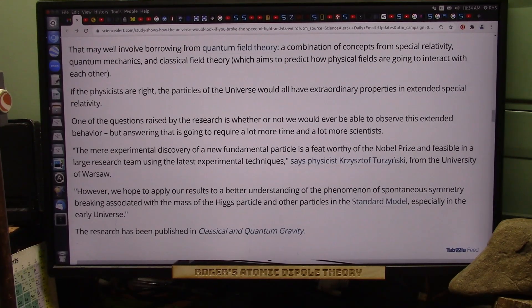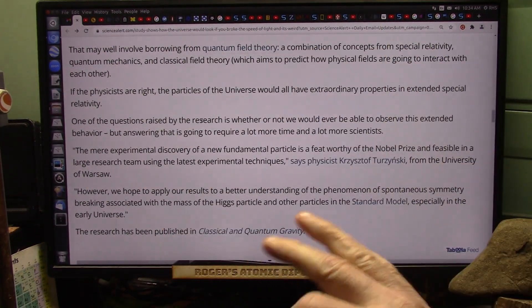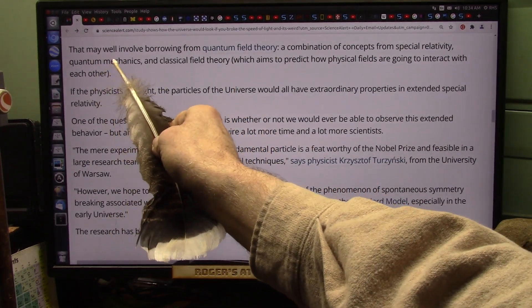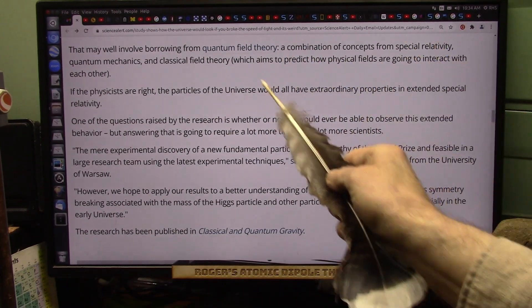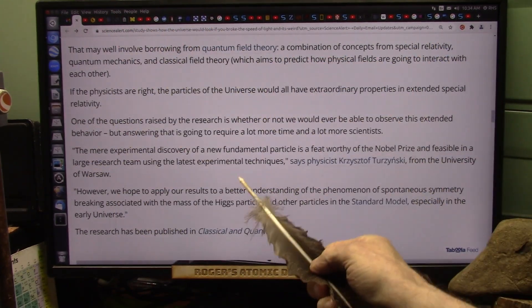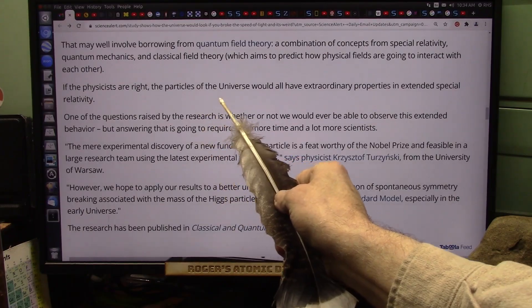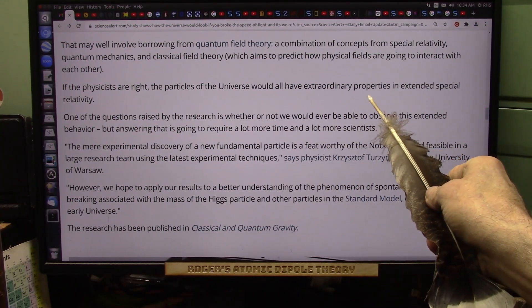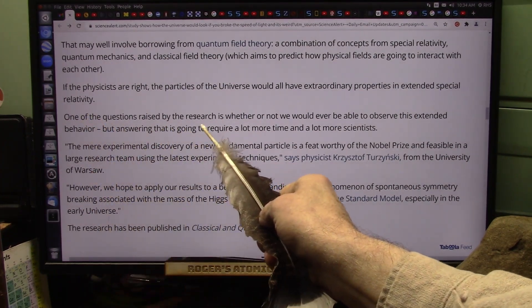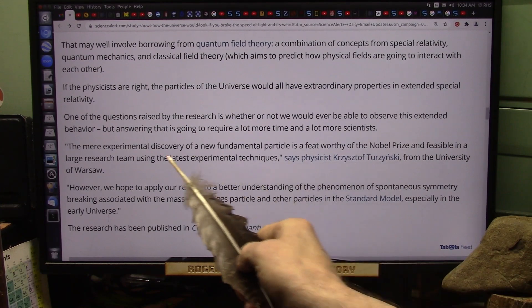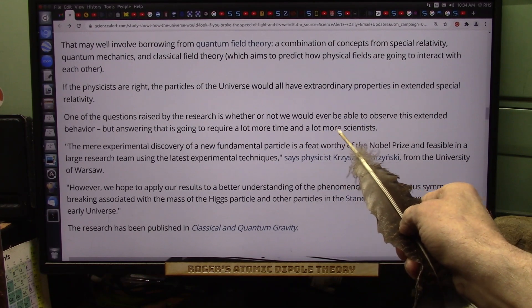Okay, it's well understood now that Einstein was wrong. Light can accelerate. Light can slow down. Light is totally different than what they thought. And they say that may well involve borrowing from quantum field theory, a combination of concepts from special relativity, quantum mechanics, field theory, and they're going to put all this glob together and try to make new particles. If the physicists are right, the particles of the universe would all have extraordinary properties in extended special relativity. One of the questions raised is whether or not they would ever be able to observe these particles' behavior. Answering this is going to require a lot more time and a lot more scientists.